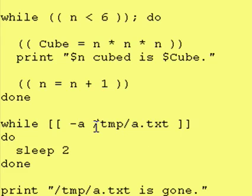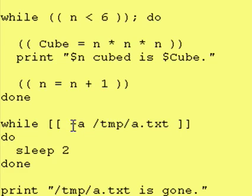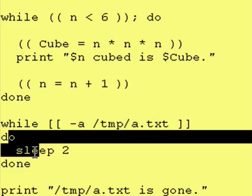We have double square brackets. We're checking to see if this file, right here, temp slash temp slash a dot txt, is any type of file. In other words, does this file exist? If it exists, then we go down within the do to the done. And we execute the code between the two of them.